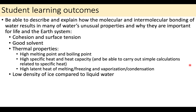By the end of this first part, you should be able to explain the molecular bonding of water and why it results in unusual properties including cohesion, surface tension, its role as a solvent, and the thermal properties of water — specific heat, latent heat, melting and boiling point differences, and the unusually low density of ice.